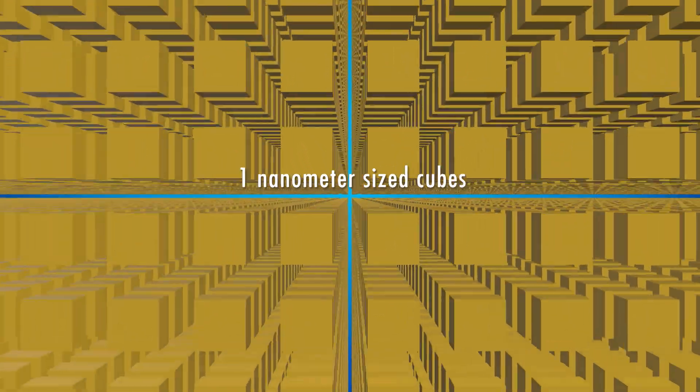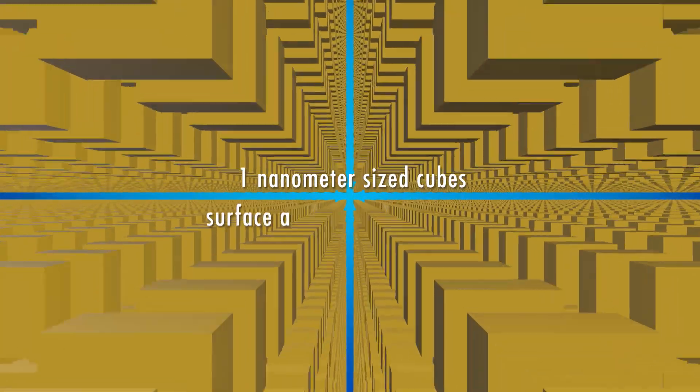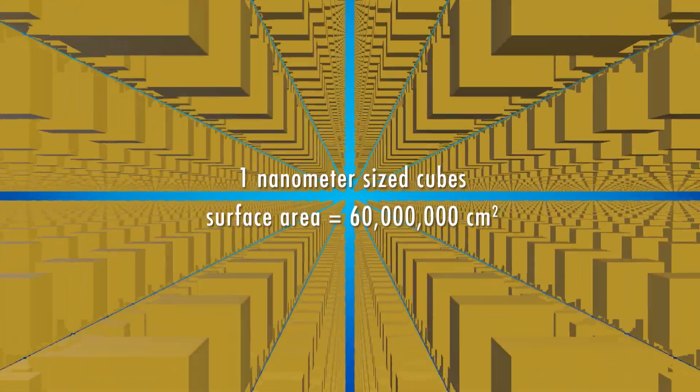Take that same cube, but the same exact volume. Divide it into one nanometer-sized cubes. Now, the total surface area is 60 million square centimeters.